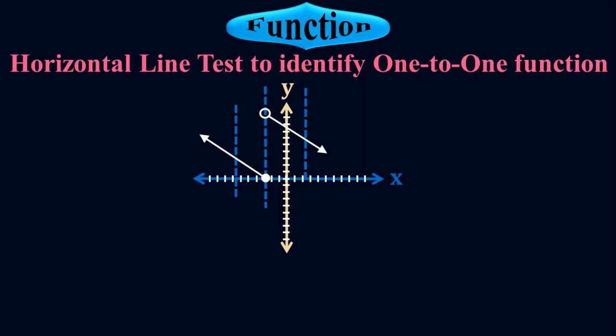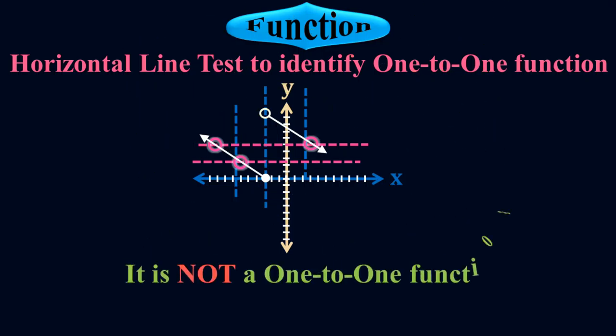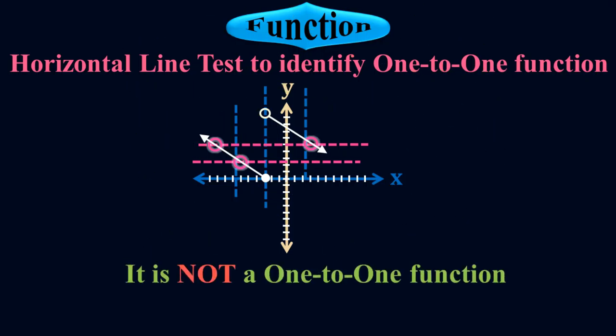Now to check its one-to-one feature, I'm going to apply the horizontal line test. Let me pass the horizontal lines. Both horizontal lines touch the graph at these points, where the first one touches the graph twice. So it does not satisfy the horizontal line test, therefore it is not a one-to-one function.